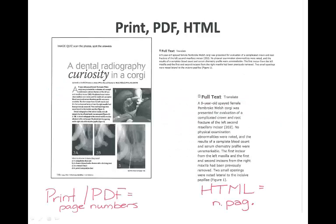Another thing to consider when pulling information online and from databases is that you'll basically find it in two forms. One is a PDF file, which stands for picture data file — it's basically a photocopy of the real print page, and the pages always look the same no matter how you resize the window. The other is an HTML file — hypertext markup language — which allows you to change the size of the screen and the text changes; there is no pagination. Be aware of these two different kinds, because it will affect how you document the source.